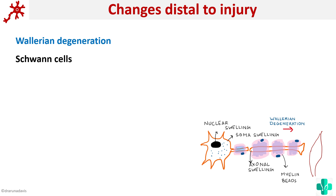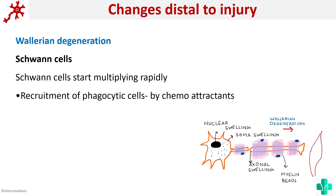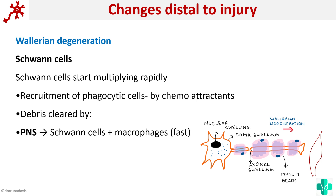The Schwann cells are not greatly affected; in fact they start multiplying rapidly. They recruit phagocytic cells by producing chemoattractants so that the debris can be cleared and regeneration can occur. This debris clearance occurs in the peripheral nervous system. In the central nervous system, this function is performed by the microglia instead.